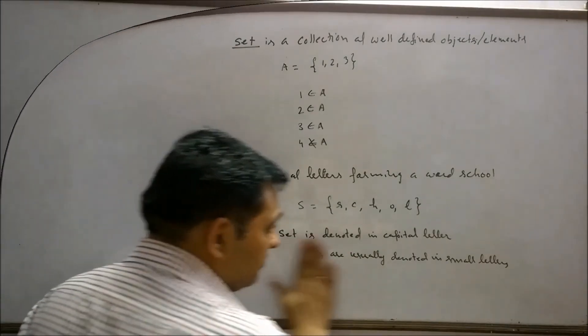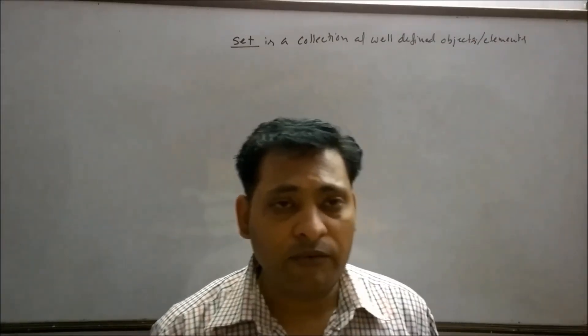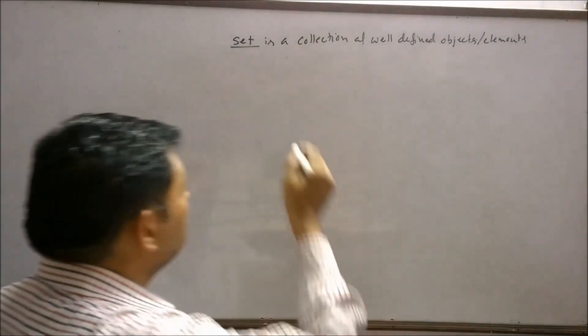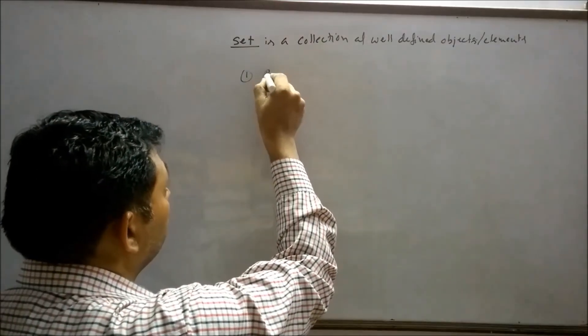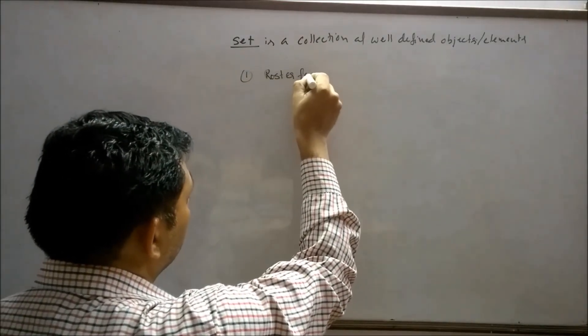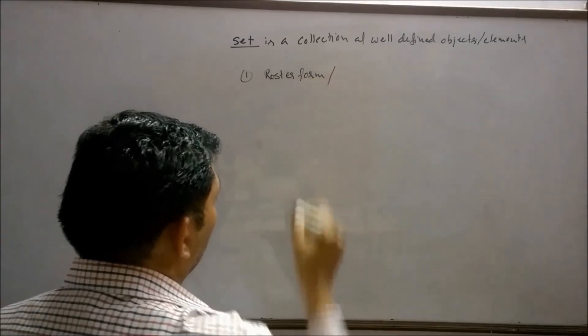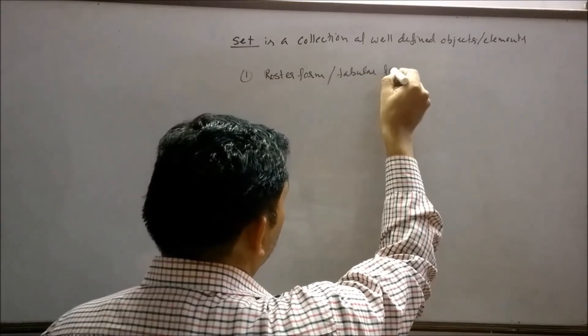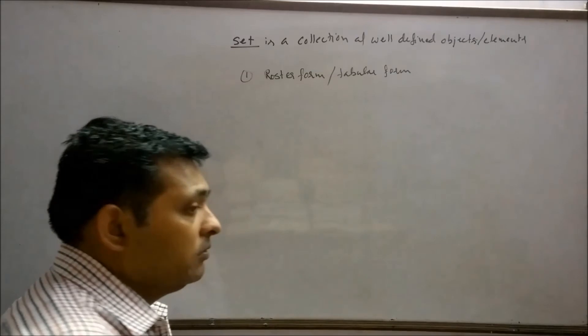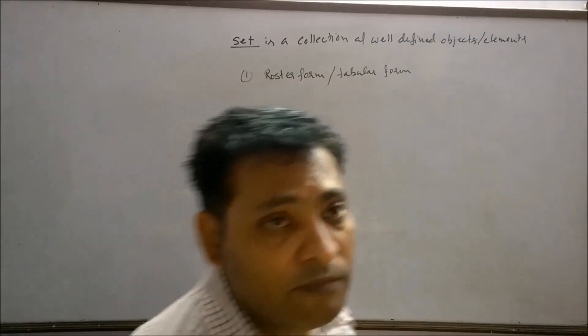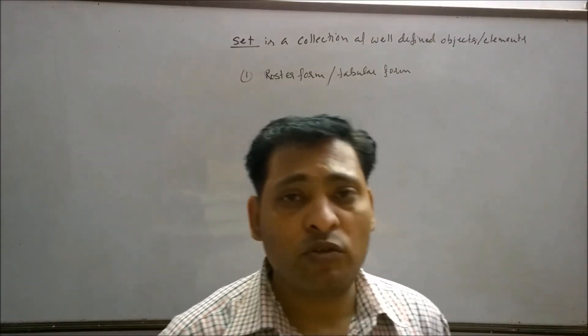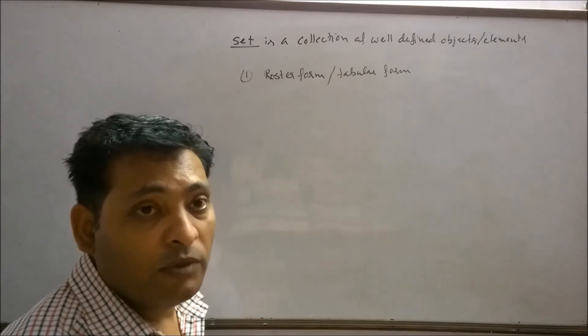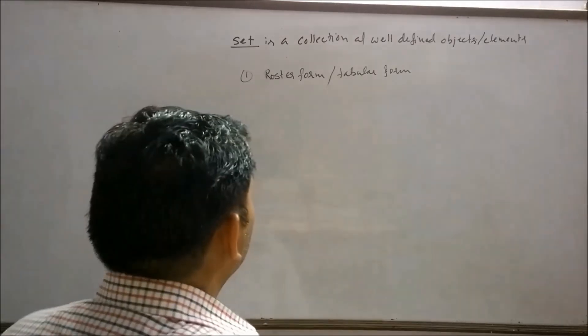The next thing is the method by which we can represent the sets. There are two main methods. One is Roaster form, or Tabular form. In starting, I have taken a set A equals to first three natural numbers, in which all elements are separated by comma and enclosed in curly brackets. It is an example of Roaster form.